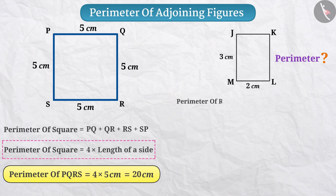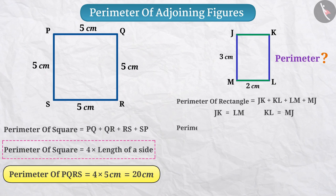But the opposite sides of the rectangle are equal as JK is equal to LM and KL is equal to MJ. So we can say that the perimeter of the rectangle is 2 multiplied by JK plus KL.